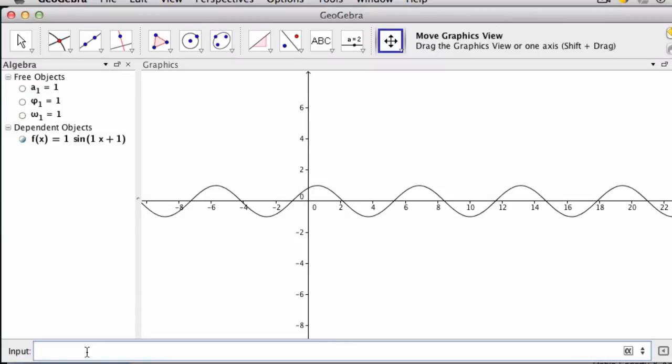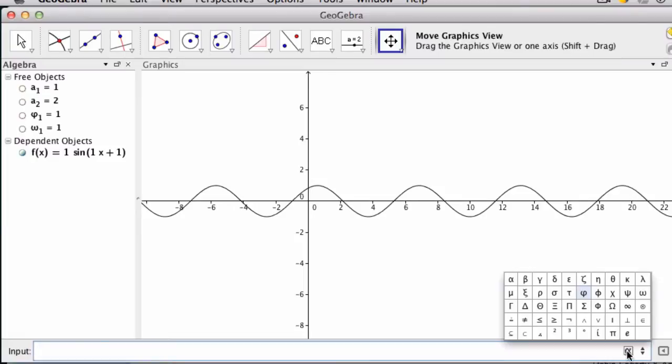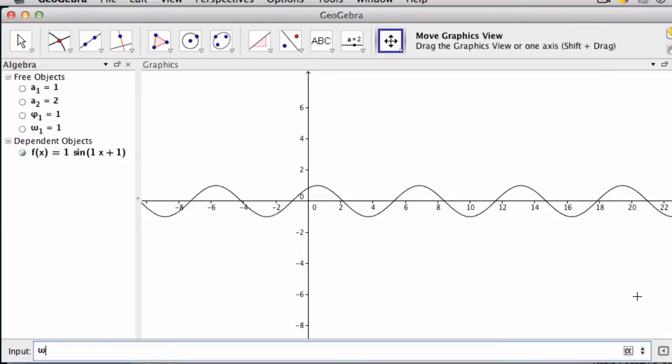Next, we can do the same thing with another set of index variables. So a sub two, let's have it equal one, well, let's have it equal two. And then omega sub one, right, that's the angular frequency.